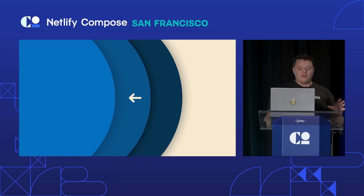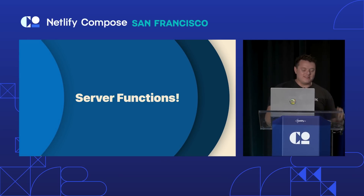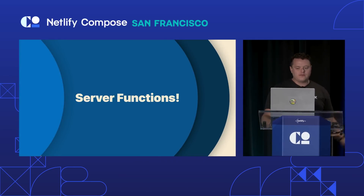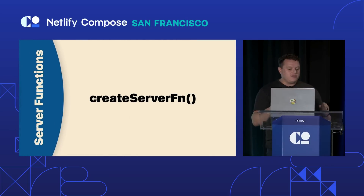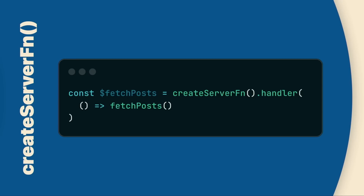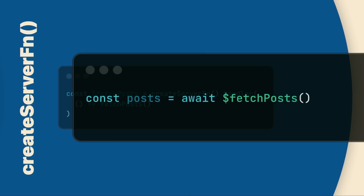Again, if we stopped here it'd already be an awesome React framework, but there's more. Start has server functions — this is what I'm pumped about. Using the createServerFunction factory, we can co-locate our server code anywhere in our files and receive a server function back. We can call that server function anywhere across our entire codebase. It's just a function that returns a promise with whatever data you return — a really awesome primitive.